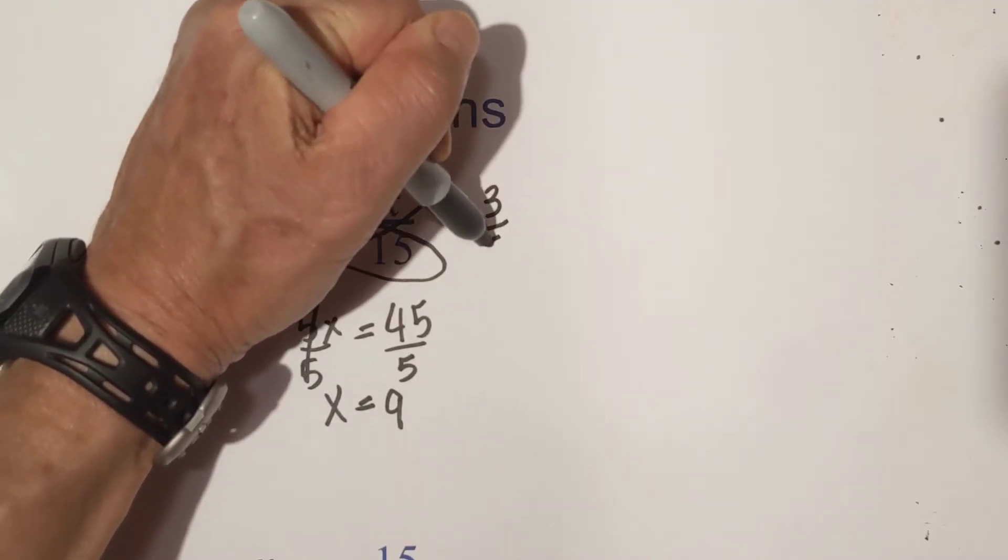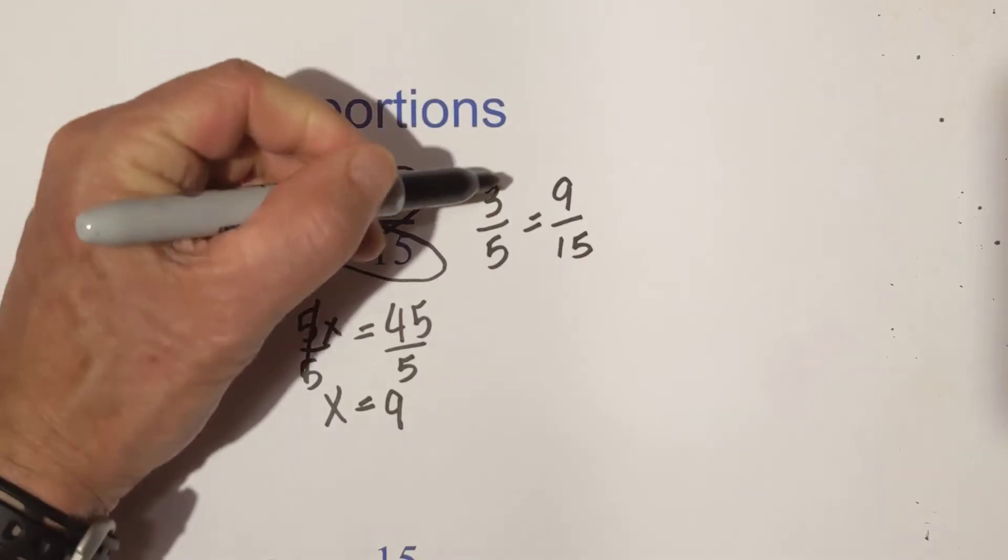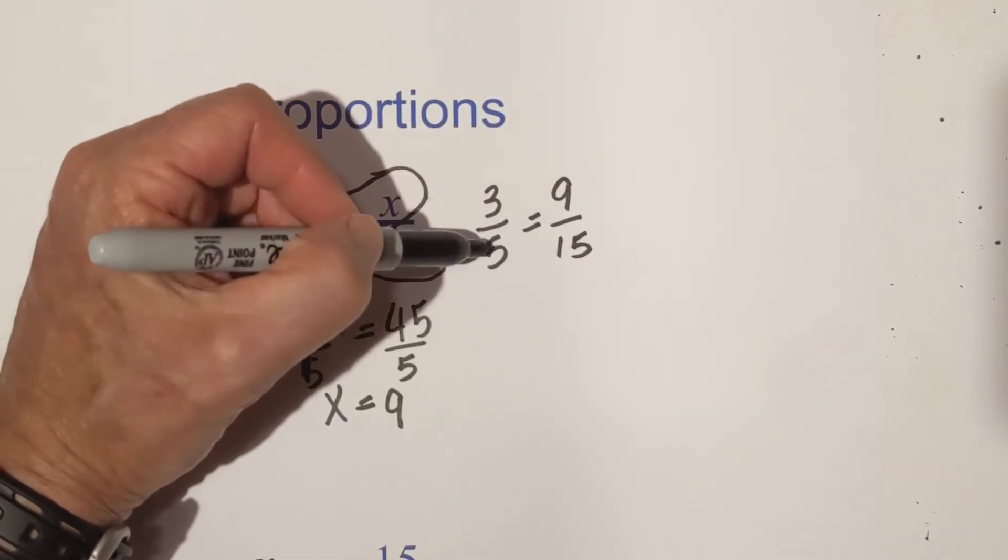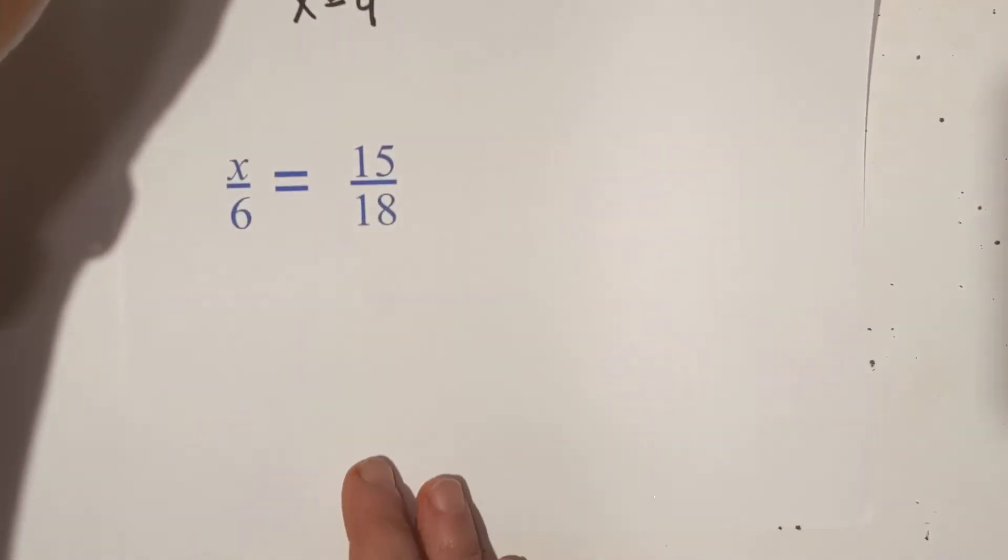Now let's see if this makes sense or not. 3 fifths is equal to 9 fifteenths. 3 goes into 9, 3 times, and 5 times 3 is 15. So there we go. Let's look at another example.